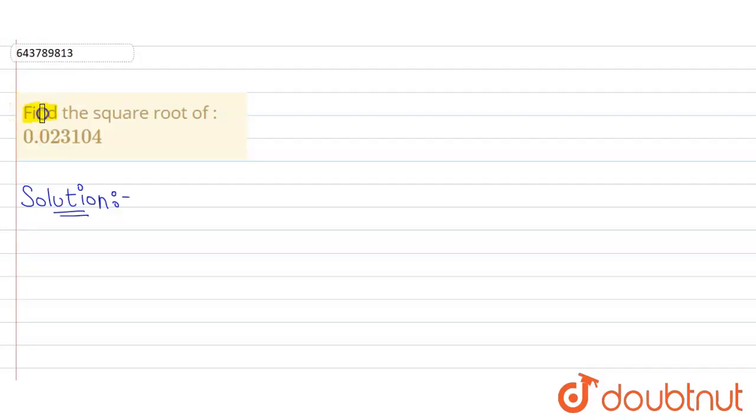we have to find the square root of 0.023104. So let us start. 0.023104. Now firstly we'll make the pairs: 2, 2, 2, and 1. Now we'll find the